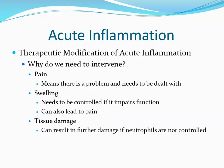Some therapeutic modifications — why do we need to intervene? First, pain signals a problem, but prolonged intense pain needs to be addressed. Swelling needs to be controlled if it impairs function of a joint or organ. Tissue damage can result in further tissue damage if neutrophils aren't controlled — for example, immune complexes laid down can signal neutrophils, resulting in frustrated phagocytosis and further tissue damage, potentially destroying healthy tissue.